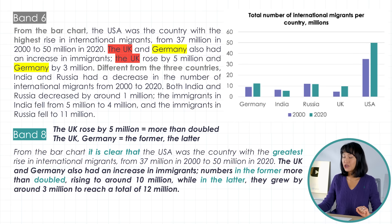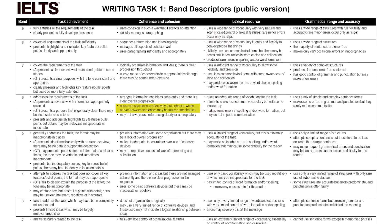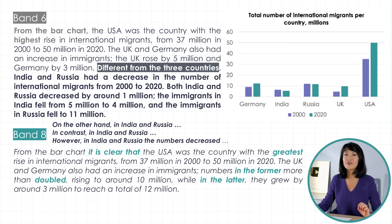Let's see how it might look. 'The UK and Germany also had an increase in immigrants. Numbers in the former more than doubled, rising to around 10 million, while in the latter they grew by around 3 million to reach a total of 12 million.' Another issue is the so-called cohesive devices or linking words and phrases — they are not as effective as they could be. The band 6 descriptor reads: 'uses cohesive devices effectively, but cohesion within or between sentences may be faulty or mechanical.' That's exactly what we have with 'different from the three countries' — it could be better to write 'on the other hand' or 'in contrast'.